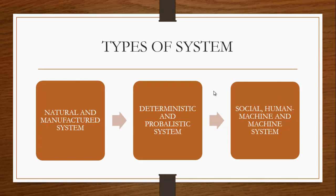We also have deterministic and probabilistic systems. A deterministic system operates in a predictable manner with certainty — you can determine that when an input is processed, the output will surely be a specific result. A probabilistic system is one where the output cannot be determined with certainty; the output is uncertain. When you cannot determine the output with certainty, such a system is classified as a probabilistic system.